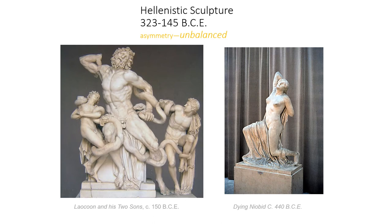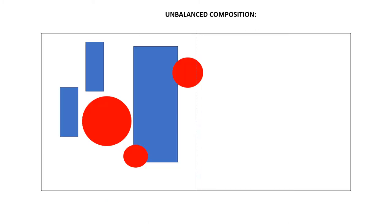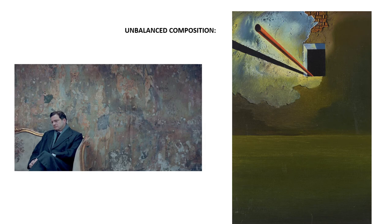Later in the Greek era, Hellenistic sculptures were created that showed an unbalanced pose, and typically these were very dramatic and included a sense of motion. Often they were based on a diagonal line, which also adds to that sense of imbalance and tension. An unbalanced composition is one where the visual weight of one side is not balanced on the other side. Unbalanced compositions like these tend to create a sense of tension, of something about to happen, and they're not as calm and don't have the relaxed impact that a balanced composition does.